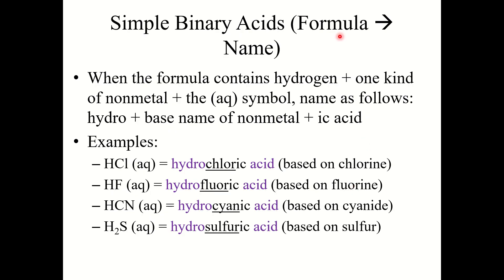So let's talk about how we name binary acids — going from formula to name. When the formula contains hydrogen plus one type of nonmetal plus the (aq) symbol, you name it as follows: add the prefix hydro, plus the base name of the nonmetal, plus -ic, and the word acid. Think of it as taking the ionic name — for example HCl would be hydrogen chloride — and smushing it together: hydrogen chloride becomes hydrochloric acid. So HCl(aq) is hydrochloric acid.